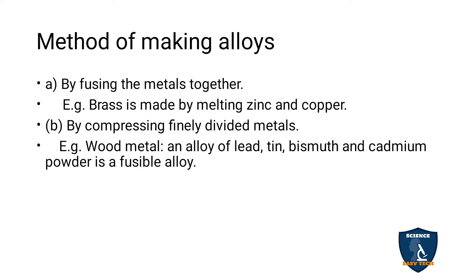Methods of making alloys: the first method is by fusing the metals together. An alloy is a fusion of two or more metals. For example, brass is an alloy made by melting zinc and copper together — the zinc and copper are melted, mixed, and form brass.